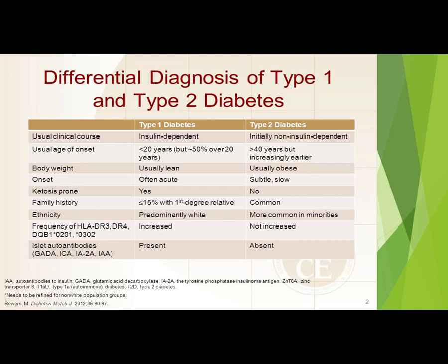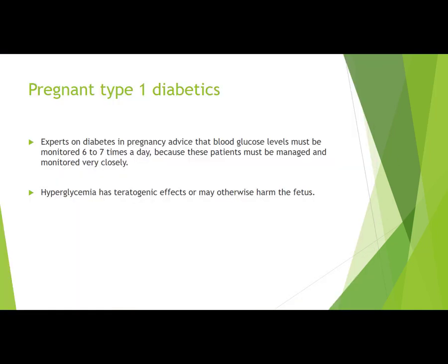Type 2 diabetes is what we generally think of as diabetes in the broader population. These patients are typically overweight or obese, above the age of 40. The onset is gradual, they're not necessarily ketosis-prone, and type 2 is more common in minorities than in the majority population.